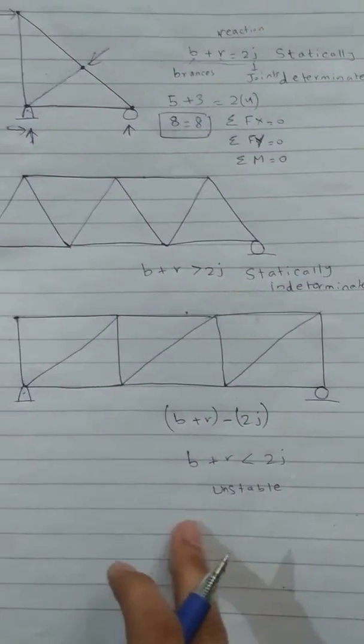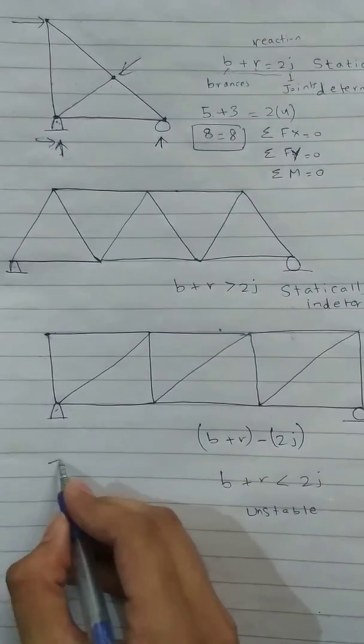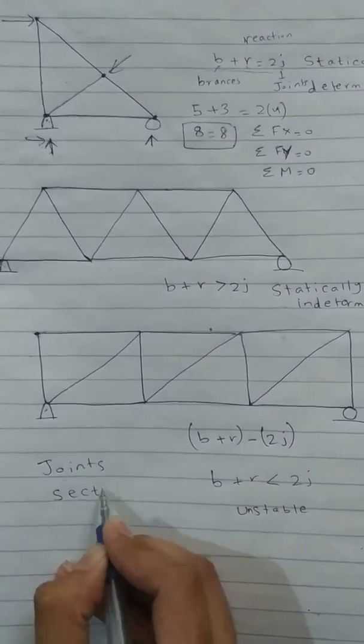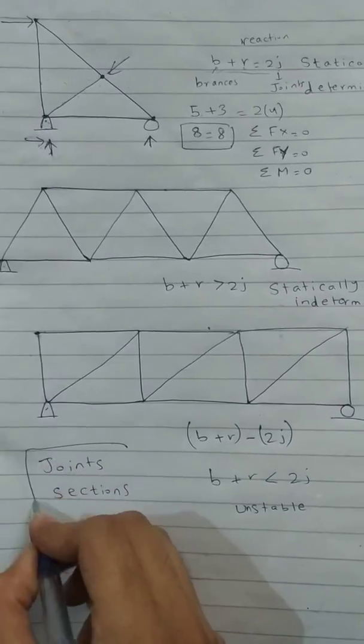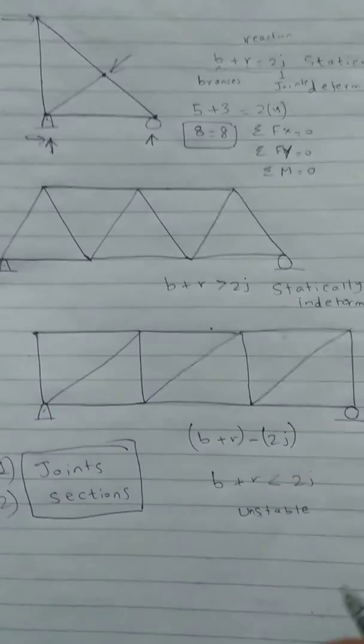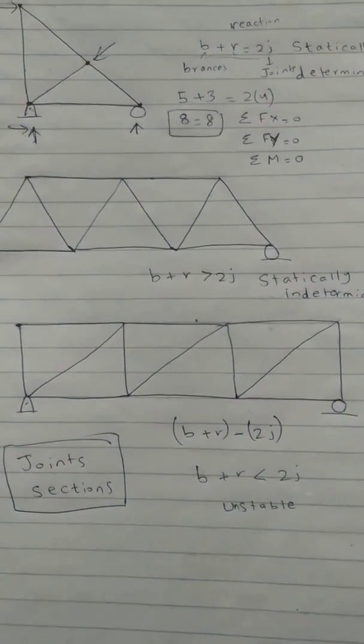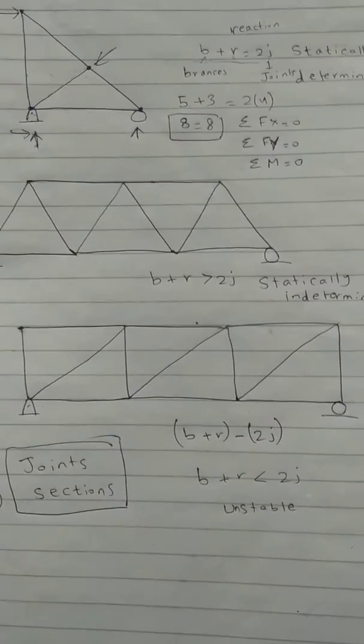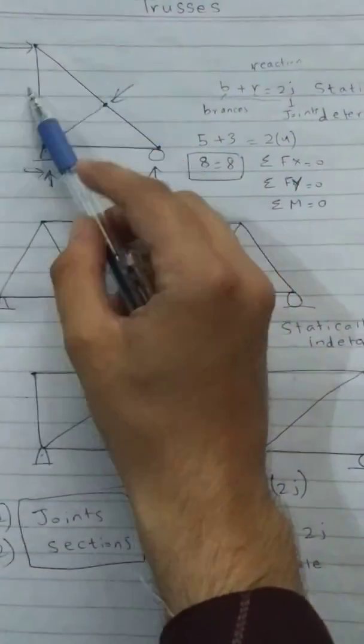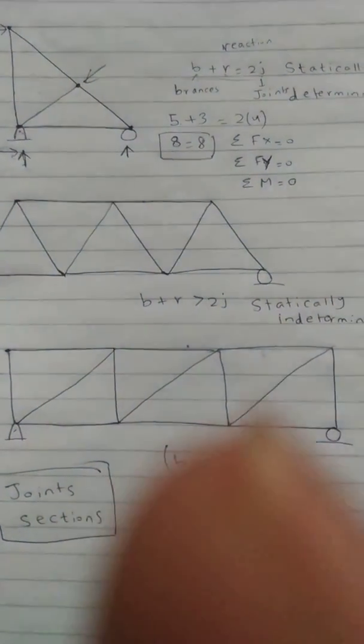The two methods that are used to solve trusses are method of joints and method of sections. These are both selected depending upon the situation from which we can get the reactions and solutions easily. We will be discussing in the next video how to solve for truss reactions and how to find the forces inside these members. Thanks for watching the video.